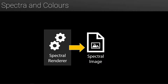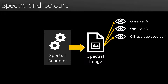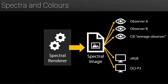The output of a spectral renderer is a spectral image — to be precise, an MEC spectral image. This has several advantages over a traditional RGB image. First, it is observer independent, which means the image can always be recalibrated for a specific observer instead of relying on the average observer. Second, it is display independent: the spectral information can be represented in any color space with a high degree of accuracy rather than relying on approximative color transformations.